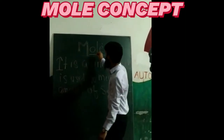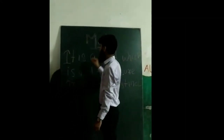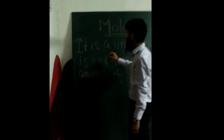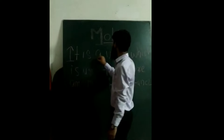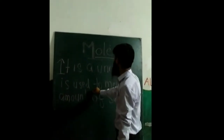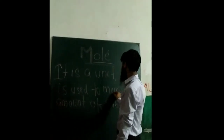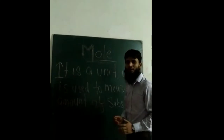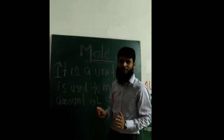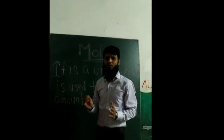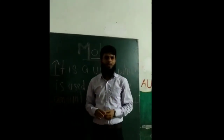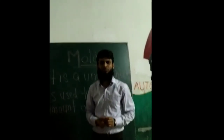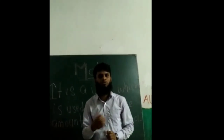Mole is a unit. This is the first definition. It is a unit which is used to measure amount of substance. Amount means matra. Substance of matra is a unit of mole.